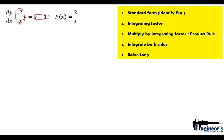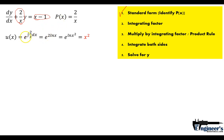Step two: we find the integrating factor. u(x) equals e raised to the antiderivative of p(x) dx. Since p(x) is 2/x, that gives us e raised to the integral of 2/x dx. The constant 2 comes out, and the antiderivative of 1/x is the natural log of x, so we get e raised to 2·ln(x), which by the power rule of exponents equals e raised to ln(x²). The e and the natural log cancel, giving us an integrating factor of x².